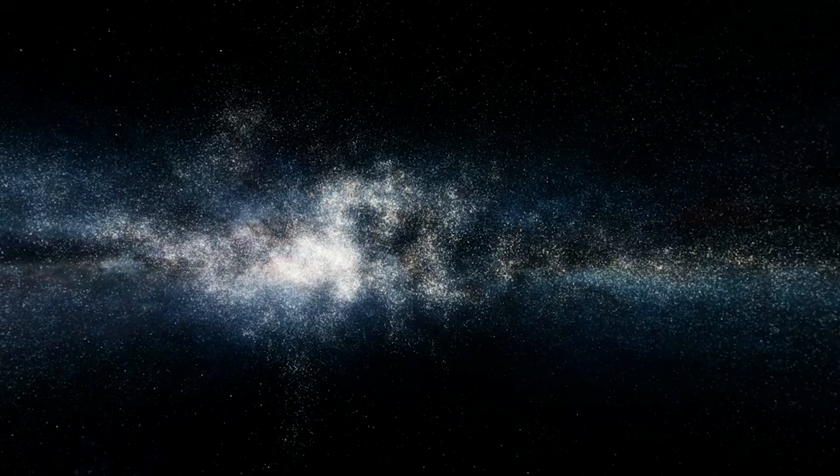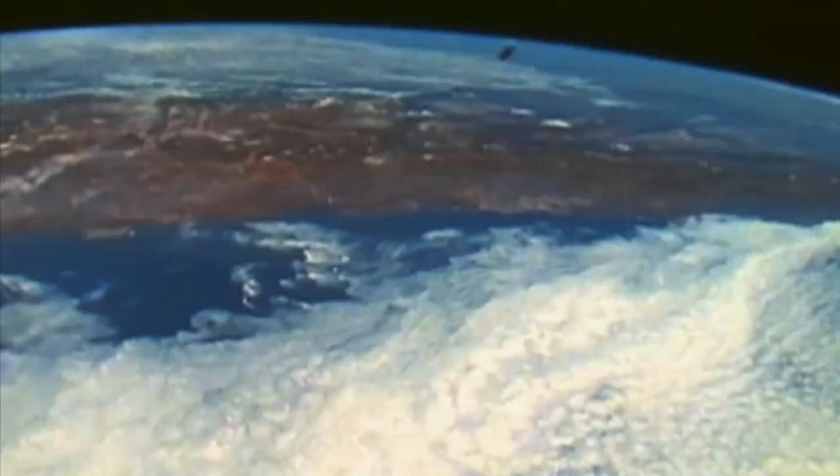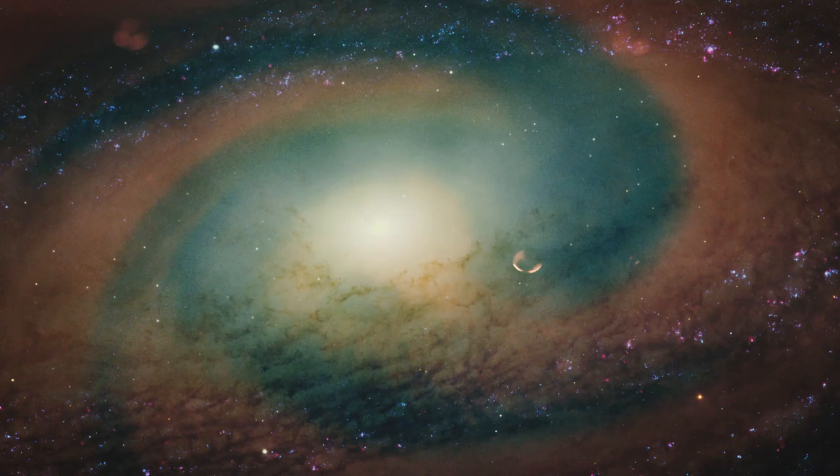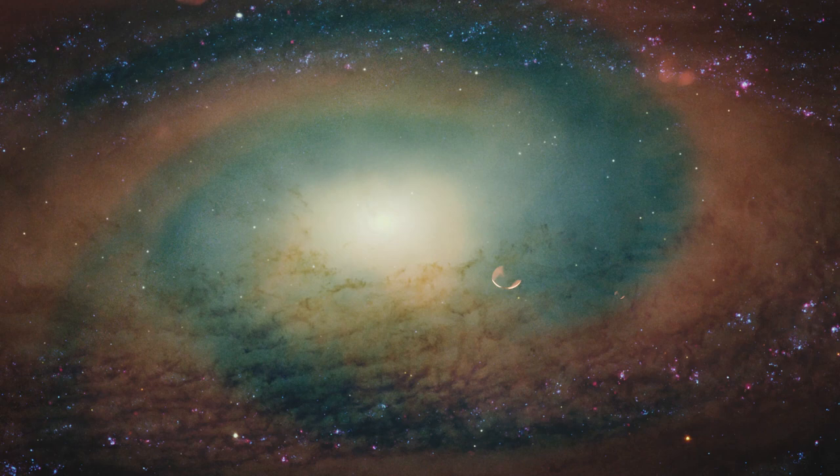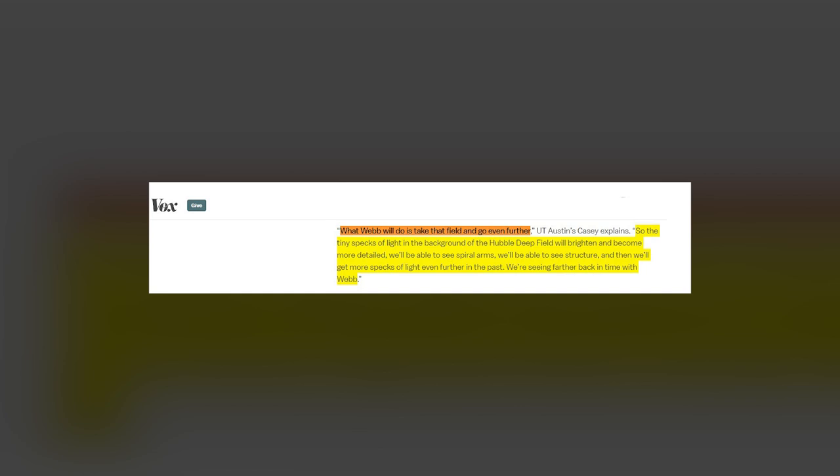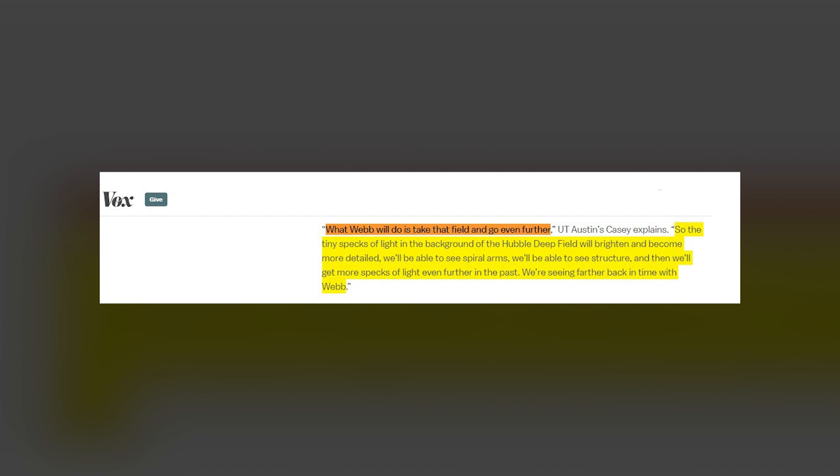In astronomy, the farther away things are, the older they are, because light from far away places takes a very long time to travel to Earth. That means this Hubble deep field is not only a snapshot of space, it also contains the history of our universe. Galaxies in this image appear to us as they were billions of years ago. What Webb will do is take that field and go even further, UT Austin's Casey explains. So, the teeny specks of light in the background of the Hubble deep field will brighten and become more detailed. We'll be able to see spiral arms, we'll be able to see structure, and then we'll get more specks of light even further in the past. We're seeing farther back in time with Webb.